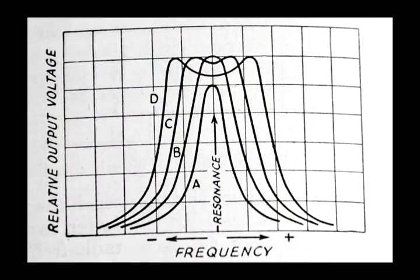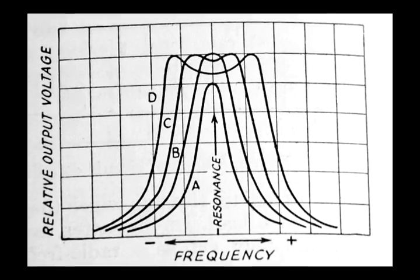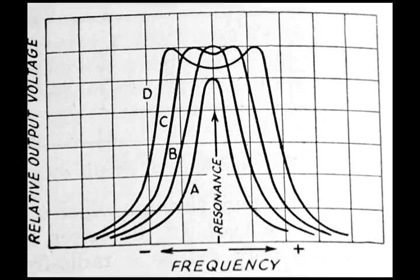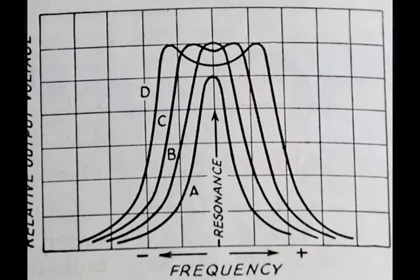As you over-couple, you dip in the middle and come back up. If your coupling is properly shaped, you can come up with a reasonable wave shape of proper width to pass whatever frequency you want. In AM, the coupling had to be arranged so the response was broad on top — a bandwidth of maybe six kilohertz. Whereas when we started to get into CW, we wanted to get down as narrow as possible. Sideband came along much later.